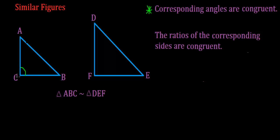Notice we name the angle according to its vertex. The vertex of this angle is labeled C, so this angle is labeled as angle C. The first property says that corresponding angles are congruent. The easiest way to find which angle corresponds to which is to look at the similarity statement — this has very important information. The order in which the letters appear in the statement will let me know which angle corresponds to which angle in the other figure.